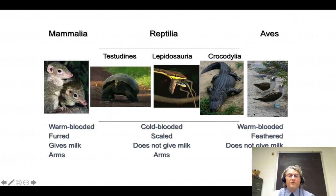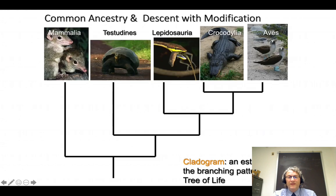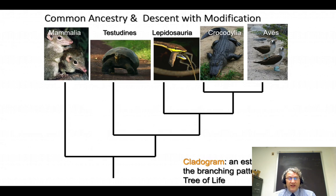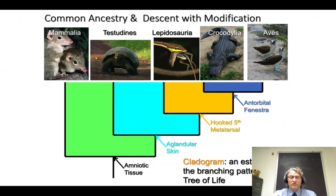Remember the figure from Monday's lecture: we saw the three living Linnaean classes of terrestrial vertebrates — Mammalia, Reptilia, and Aves — and within Reptilia three groups: Testudinata, Lepidosauria, and Crocodilia. The Linnaean system didn't tell us which were more closely related to which, but cladistics does. When we map these forms onto a cladogram, we see that crocodiles and birds are sister taxa, that lepidosaurs are sister to the crocodile-bird clade, that Testudinata are sister to that group, and that Mammalia is sister to all of them. These are supported by hundreds of shared derived features.